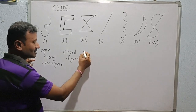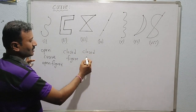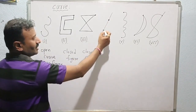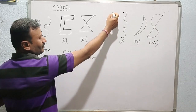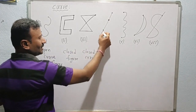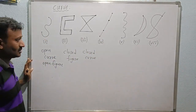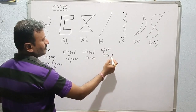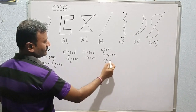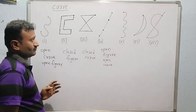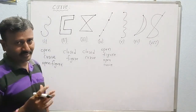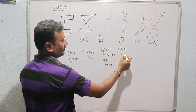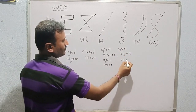Figure three is also called a closed figure or closed curve. Now for figure four, if we consider the starting point and ending point, these are different, so we can say these are an open figure or open curve. Figure five is also an open curve because the starting point and ending point are different.